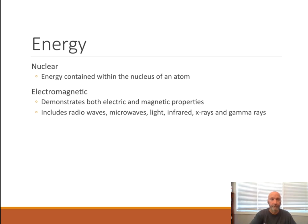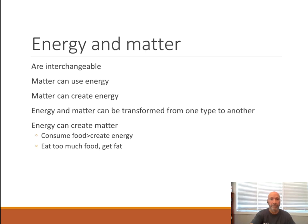What we're after primarily is electromagnetic radiation, and electromagnetic radiation is radiation that demonstrates both electric and magnetic properties. Then we're talking about energy and matter, and that's the basis for Einstein's E equals mc squared — we talked about them being interchangeable.